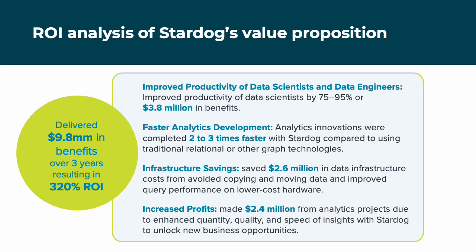We've known that enterprise knowledge graphs deliver value to businesses, and so we commissioned an independent study to help us understand and quantify it. Forrester Consulting constructed a Total Economic Impact study for organizations considering an investment in the Stardog enterprise knowledge graph platform. They interviewed four customers to create a composite organization of common characteristics. Interestingly, before implementing Stardog, three of those organizations had attempted to deploy graph technology from alternate vendors in the past. To summarize the outcome: a composite organization experiences benefits of $9.86 million over three years and an ROI of 320%.